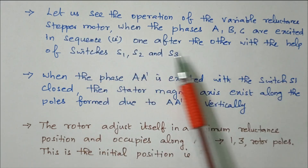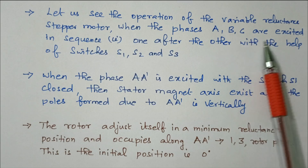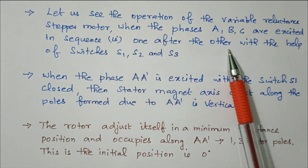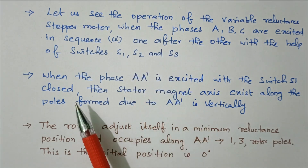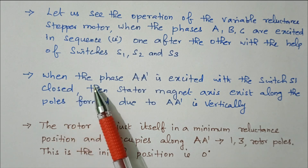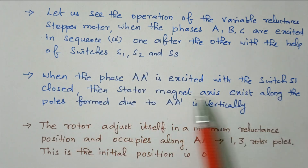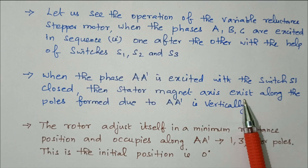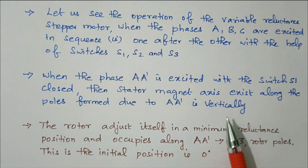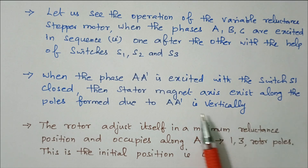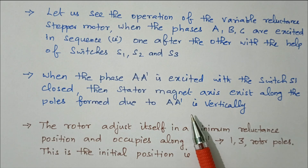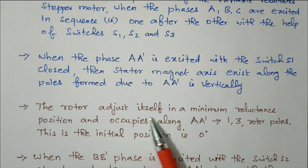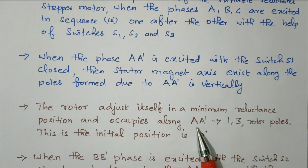Let us see the operation of the variable reluctance stepper motor when phases a, b, c are excited in sequence one after the other with the help of switches S1, S2, S3. In step 1: when phase a/a-dash is excited with switch S1 closed, the stator magnetic axis exists along the poles formed due to a/a-dash vertically. Due to that, the rotor adjusts itself to the minimum reluctance position.